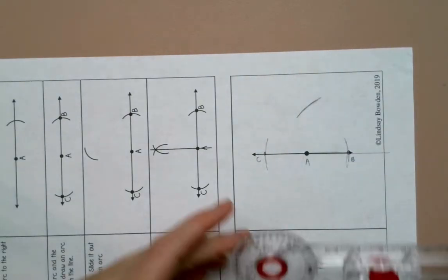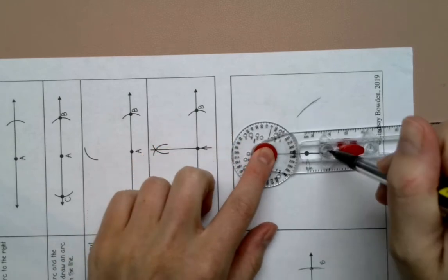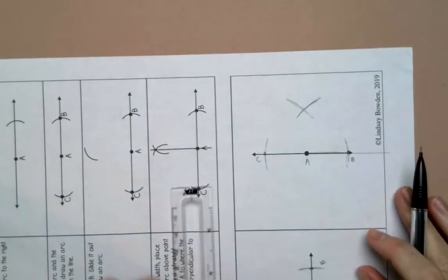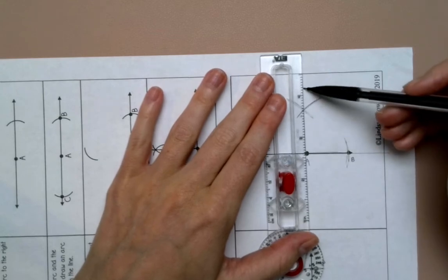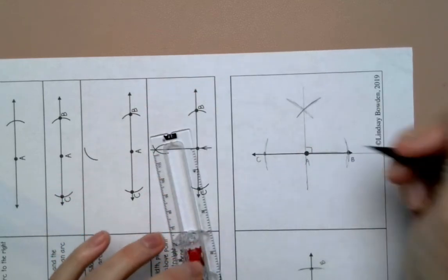And then I'm going to do the same thing without changing the width from C. And then connect. It should be perpendicular.